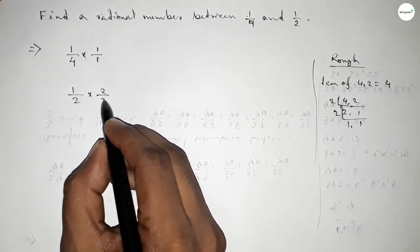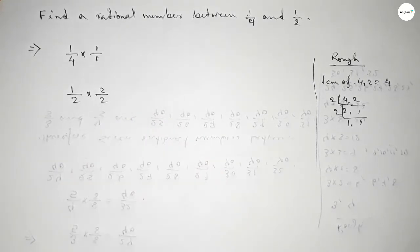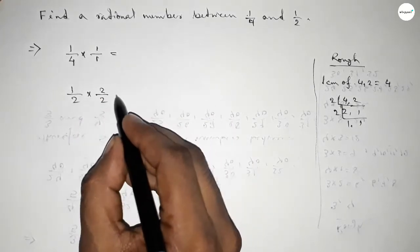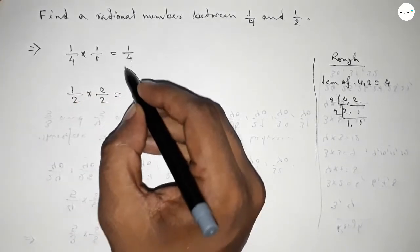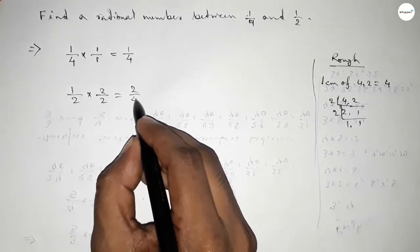So what should be multiplying here to get the denominator of both 4? If you put here 1 and here 2, so this is 1 over 4 and this is 2 over 4.